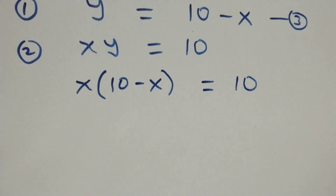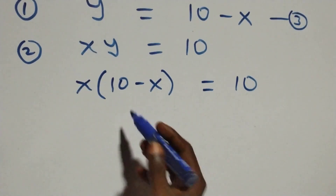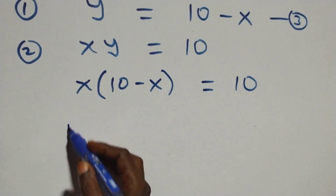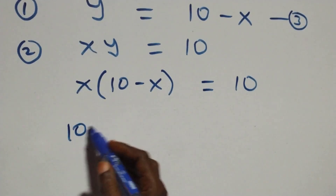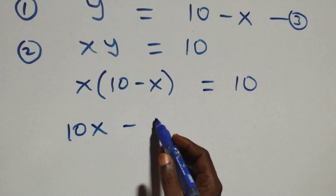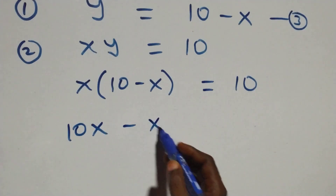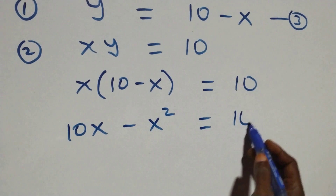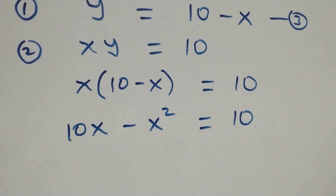The next step: we open this bracket. All we have becomes 10x minus x squared equals to 10.